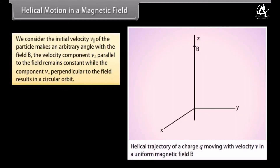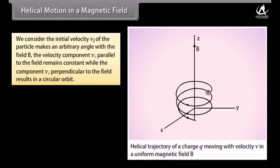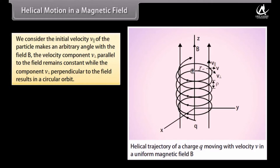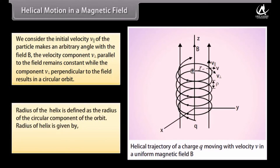Helical motion in a magnetic field: We consider the initial velocity V of the particle making an arbitrary angle with the field B. The velocity component parallel to the field remains constant while the component perpendicular to the field results in a circular orbit. The radius of the helix is defined as the radius of the circular component of the orbit, given by r = M·V_⊥ / QB.